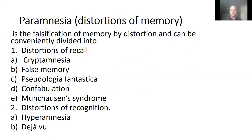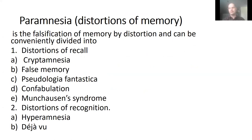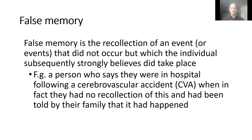Paramnesias are distortions of memory — not loss, but perversion and change. The types of distortion of recall include: cryptomnesia, false memories, pseudologia, and confabulation. Distortion of recognition is an exorcist memory — memory which should not exist.